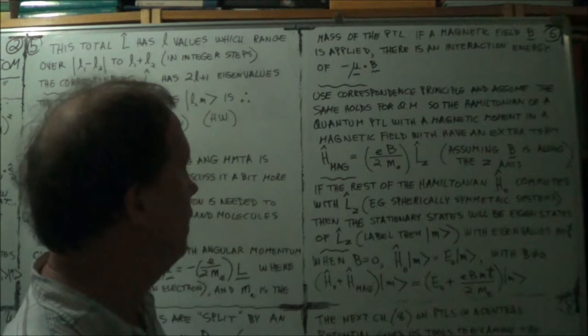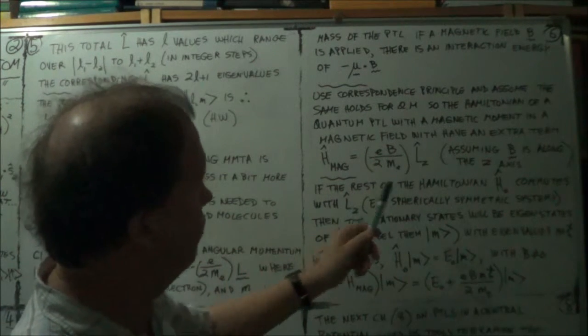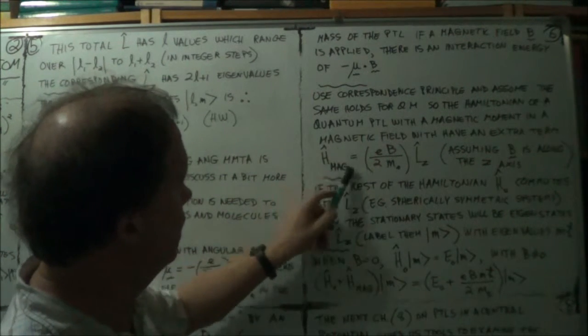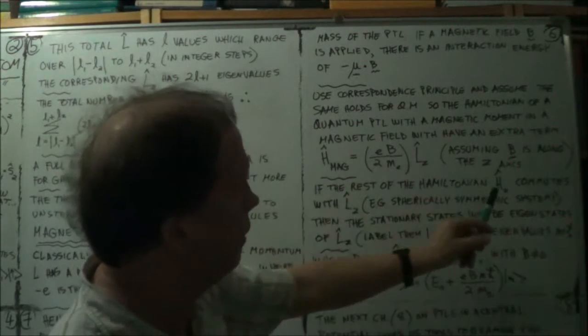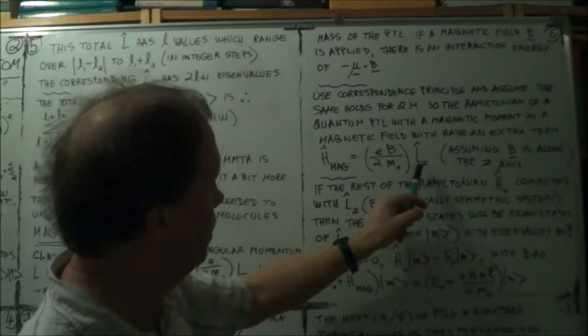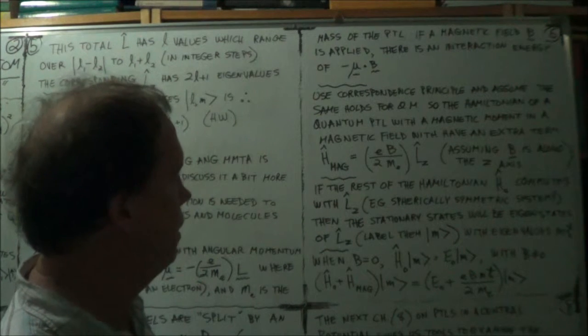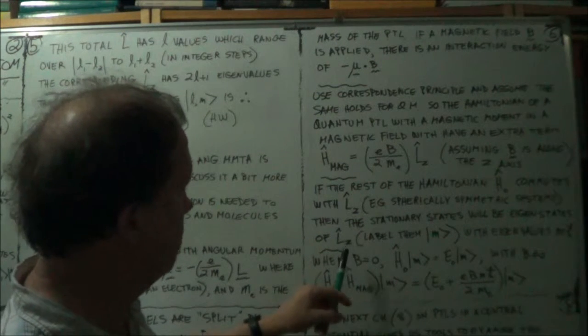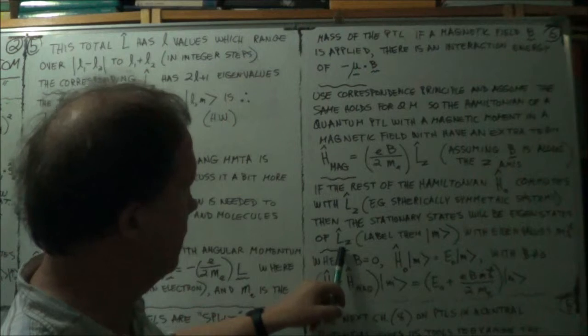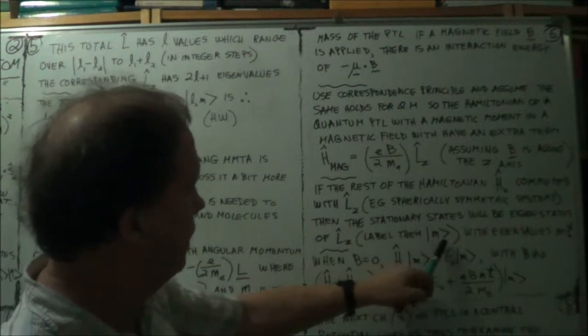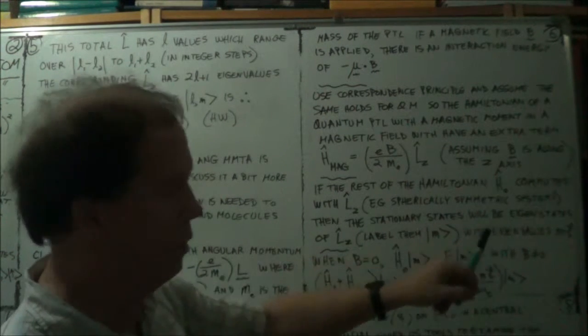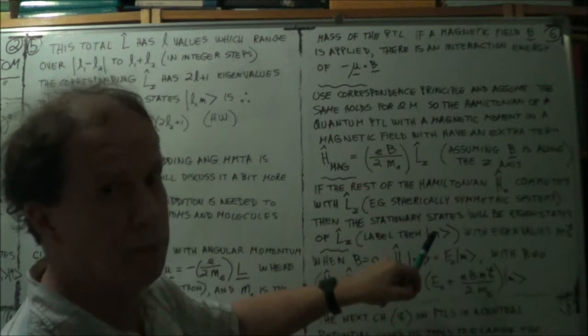Now, if the rest of the Hamiltonian, like this is an additional term to it, but the other parts of the Hamiltonian, if they commute with this, then your eigenstates will just be eigenstates of L_z, right? Because the rest commute. We did that a bit before.